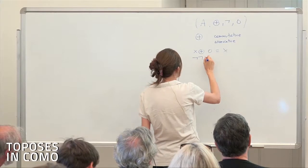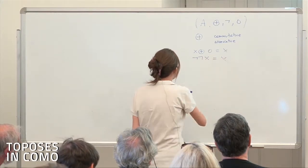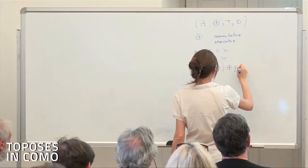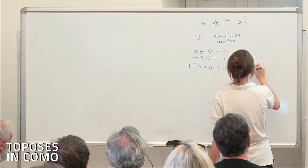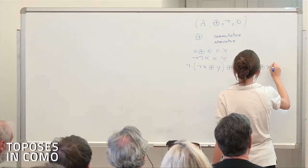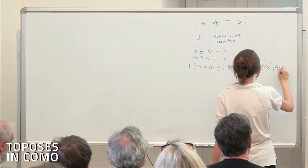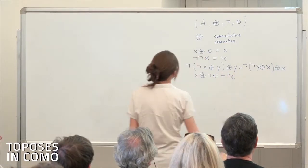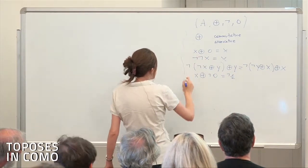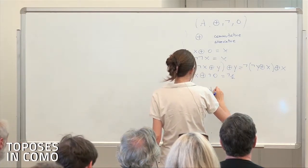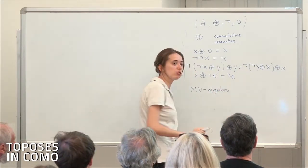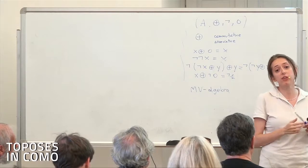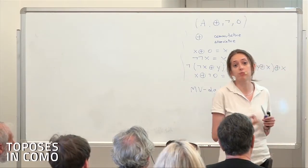An MV algebra is the natural analog of a Boolean algebra for Łukasiewicz infinite-valued (multi-valued) logic. The way you traditionally construct MV algebras is through L-groups with strong units, because this binary operation is a truncated sum.